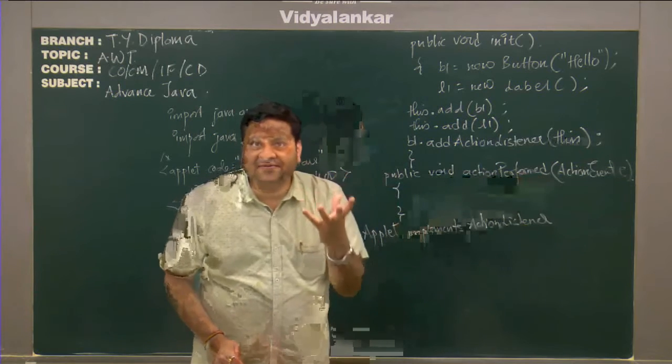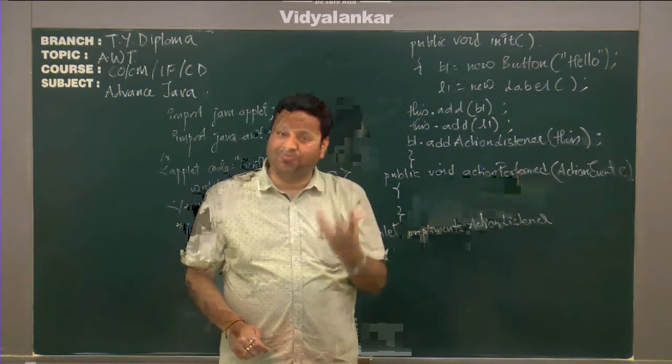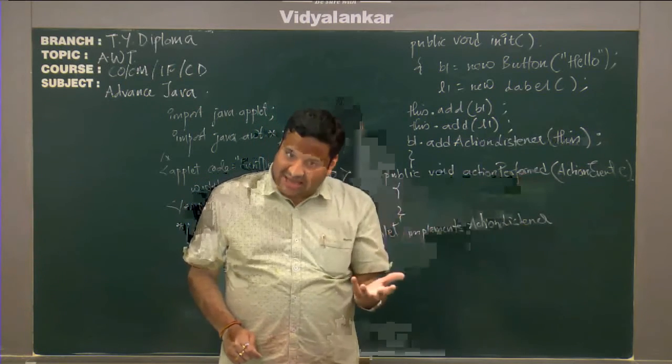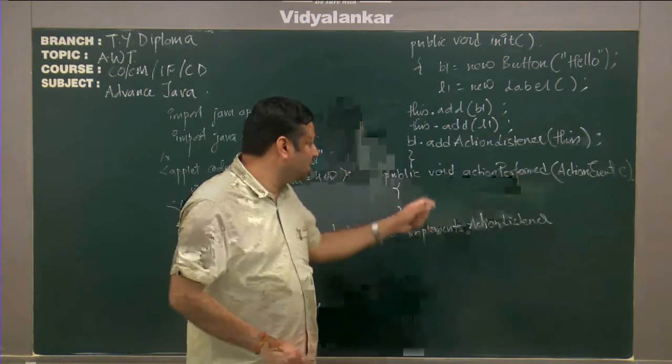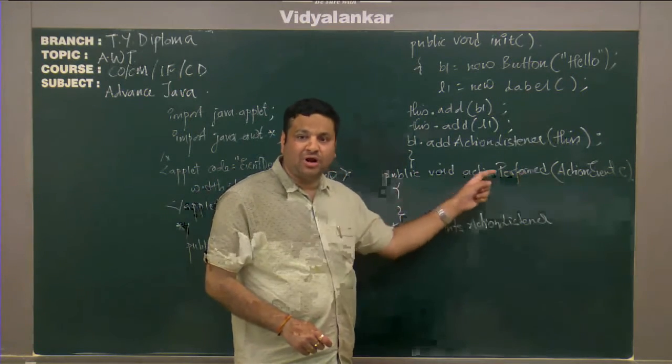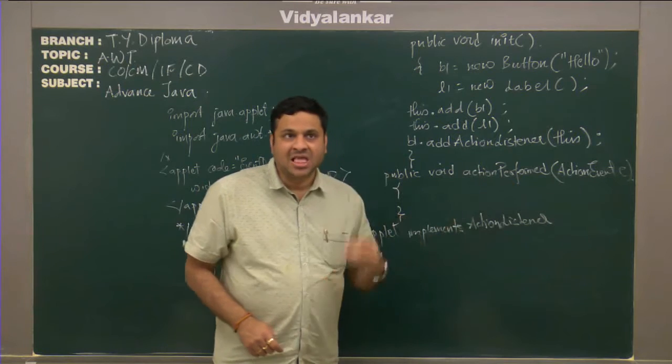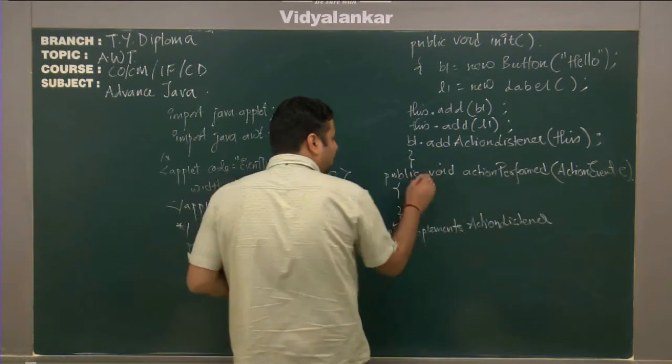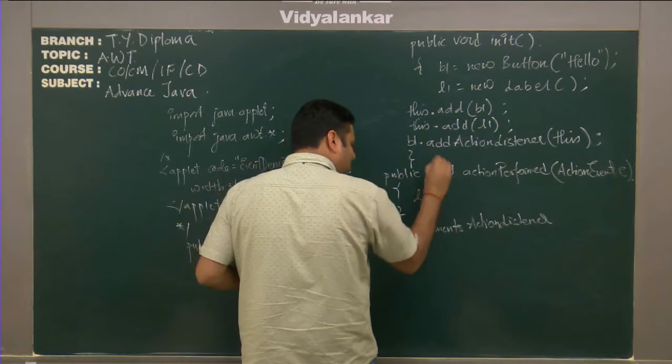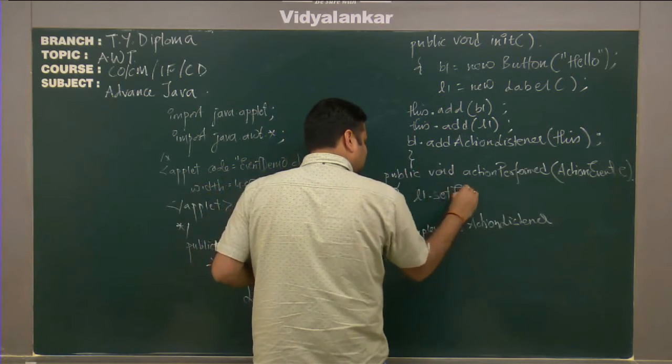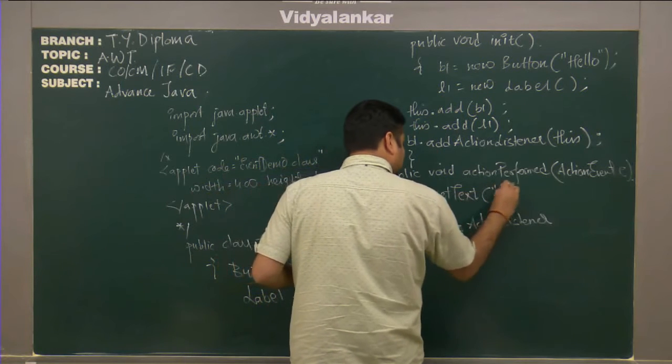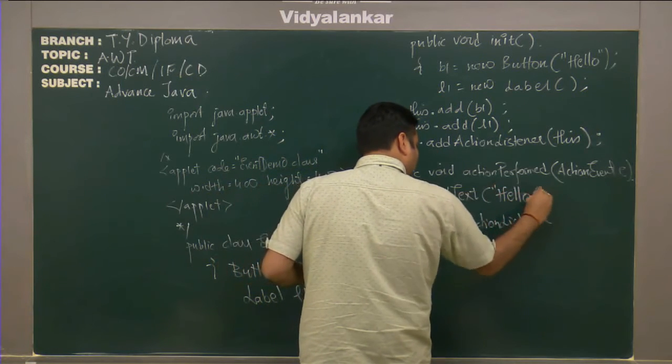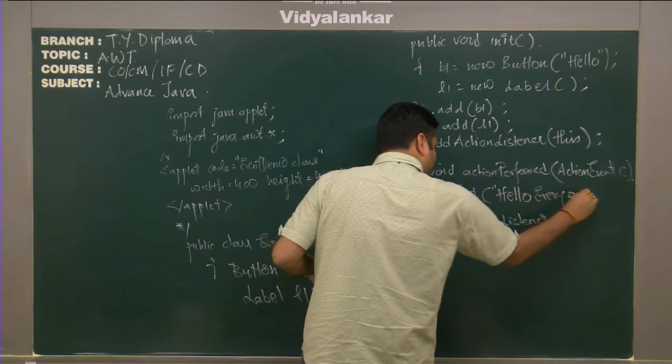Whatever reaction that we expect against the event, we can write those reaction code in these functions. For action perform, we desire the text of the label should be hello everyone. So here I should write L1 represents my label, L1 dot set text hello everyone.